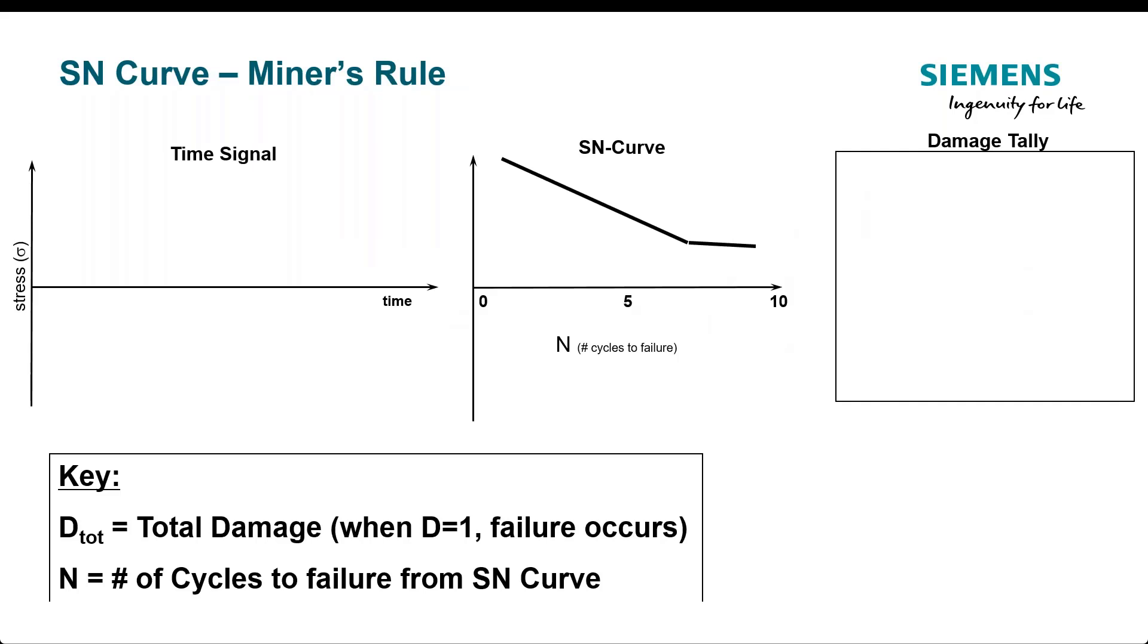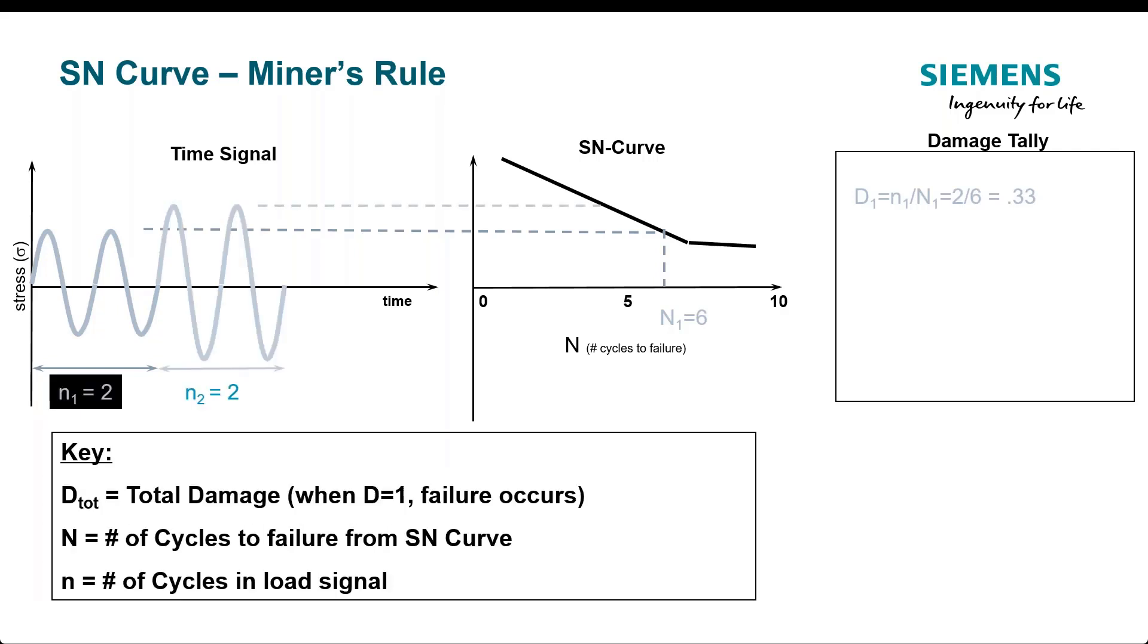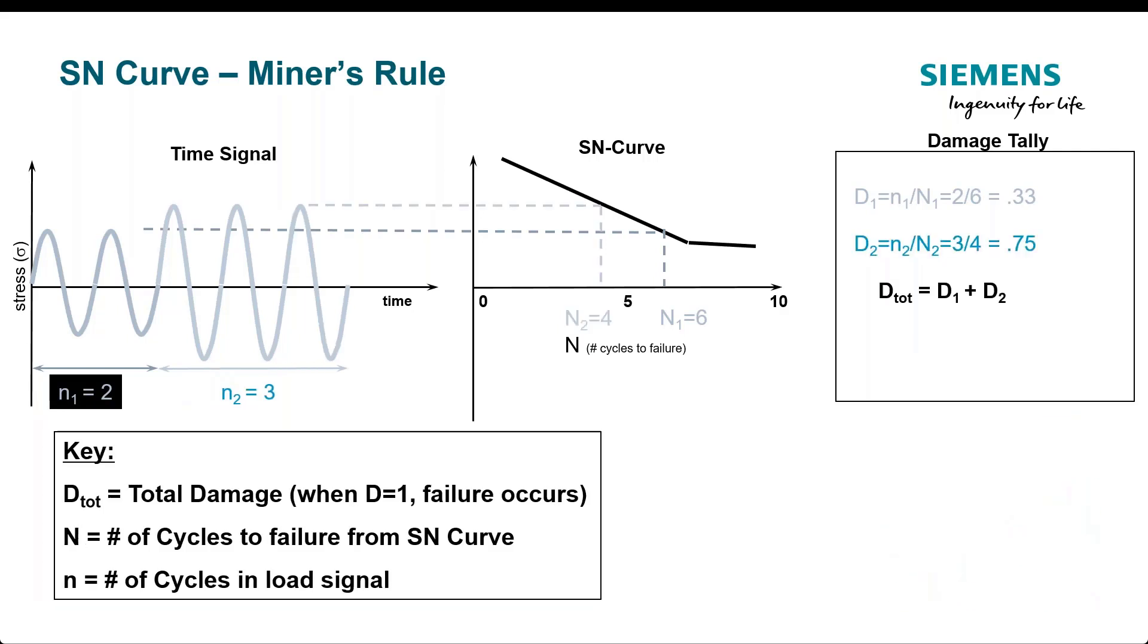So, how do we get this damage? Well, we got the SN curve and that tells us cycles to failure at a constant amplitude load test. So, we can take the cycles, we can measure the amplitude, go over here to the SN curve, divide the number of cycles by the amplitude to failure, in that case 0.33. Take another cycle, that's a bigger amplitude, lower cycles to failure, two cycles at four, that's 0.55. It's a linear damage model. So, the math is pretty easy. We just add that together and get 0.83. Now, Miner told us it fails at one, so this doesn't fail. If we added another cycle, we would get to failure.